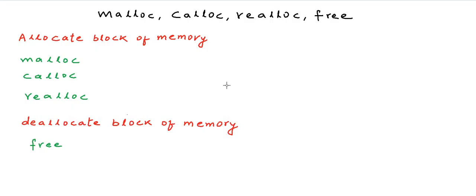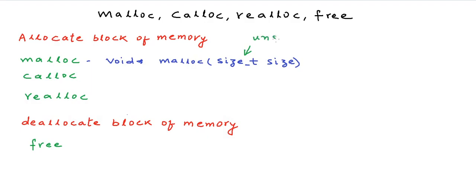Let us first talk about malloc. This is the most frequently used library function for dynamic memory allocation. This function asks you for the size of the memory block in bytes. The data type size_t stores only positive integer values — you can think of it as an unsigned integer type, since the size cannot be negative. Malloc returns a void pointer that gives us the address of the first byte in the block of memory that it allocates.